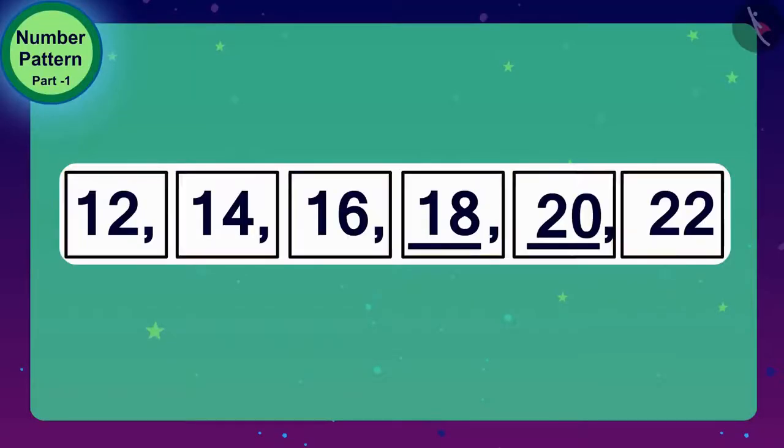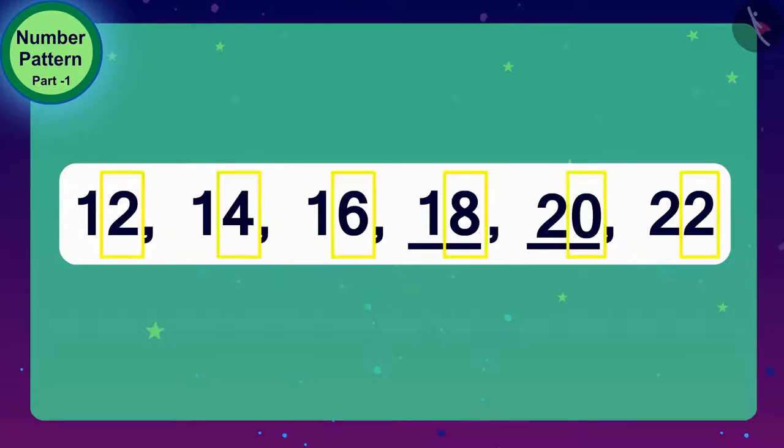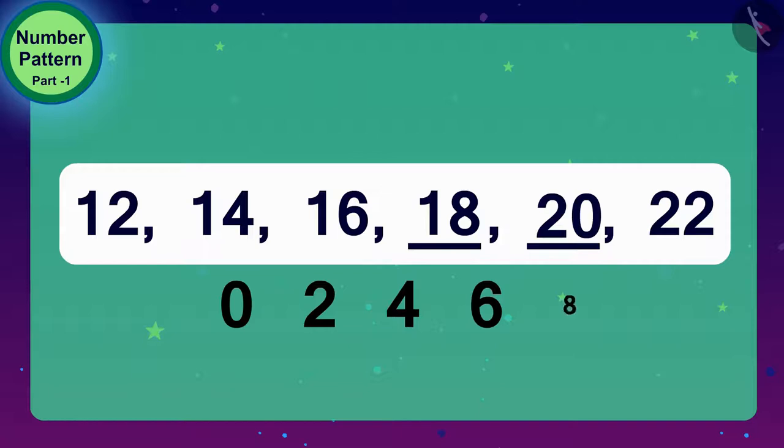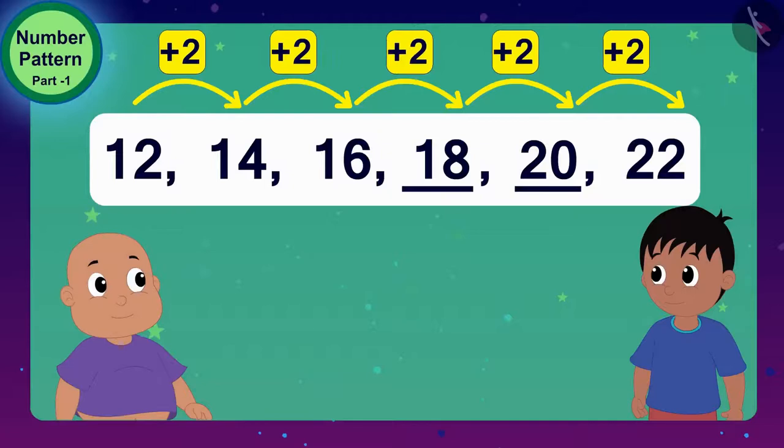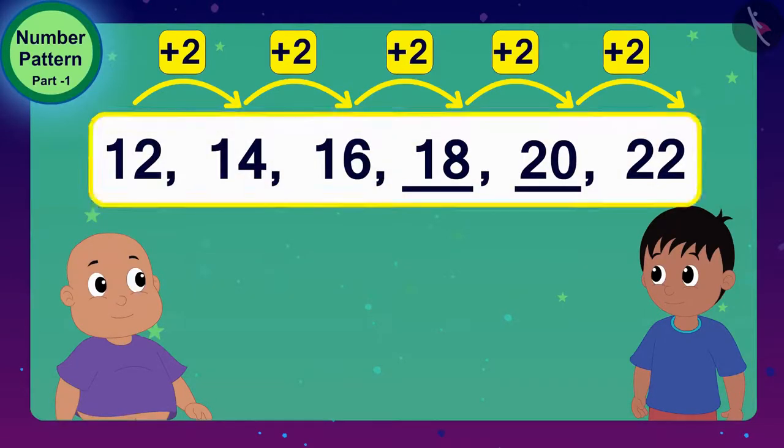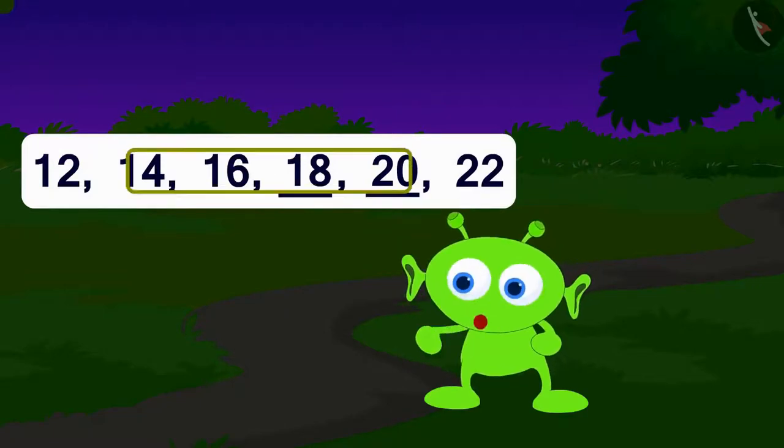Children, do you see one more special thing in these numbers? Here, all the numbers have 0, 2, 4, 6, or 8 at the unit position. Do you know that such numbers which have 0, 2, 4, 6, or 8 numbers at unit's place are called even numbers. Raju and Bablu completed this number pattern using the process of addition. Well done. Well done. You two have solved it perfectly.